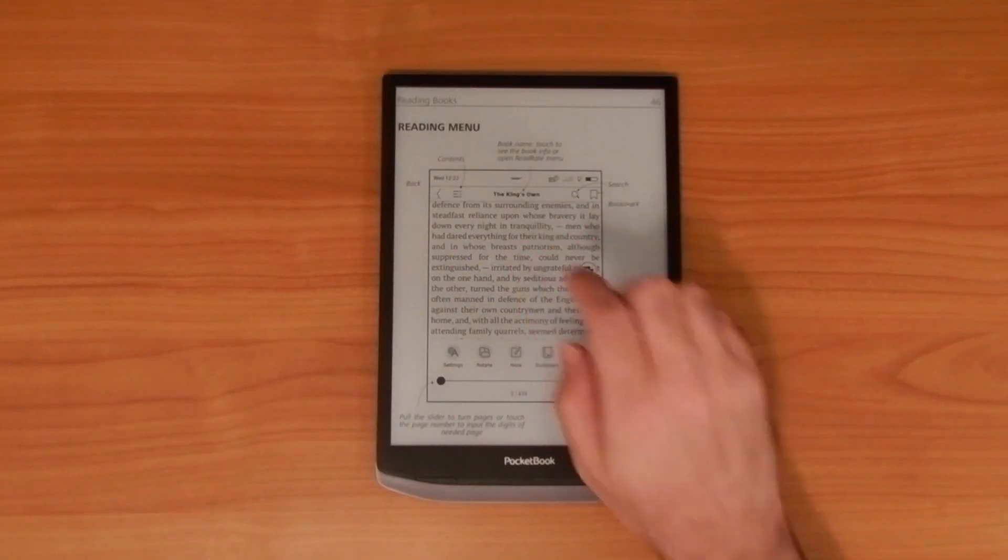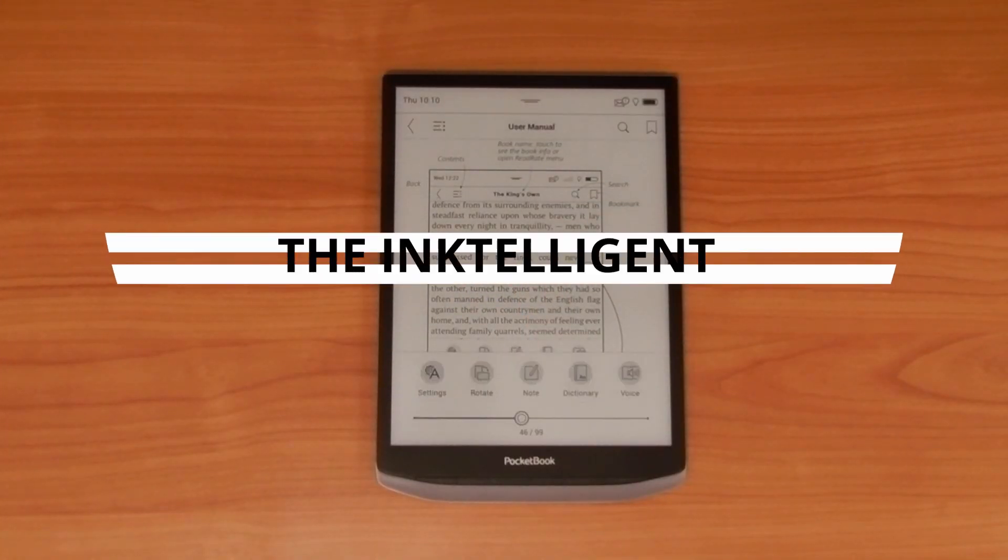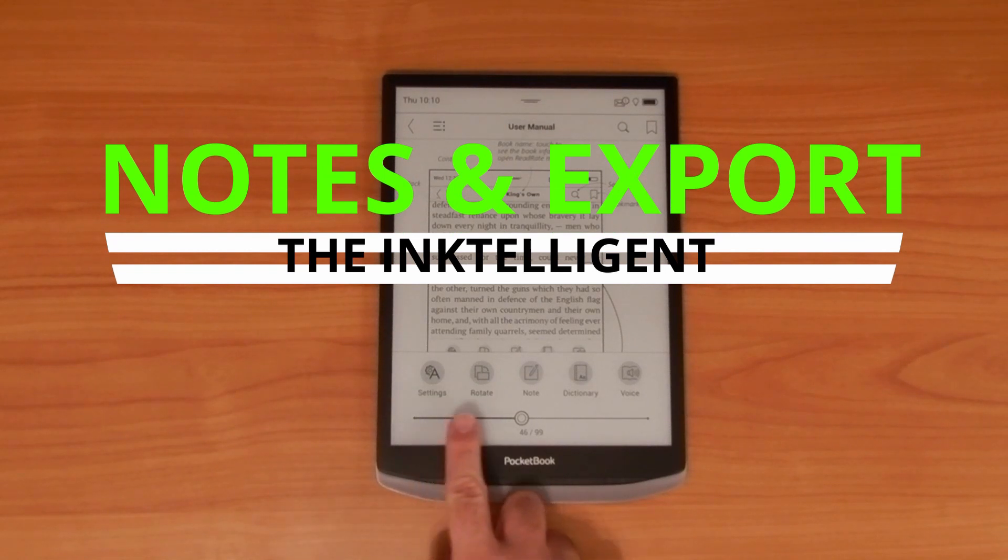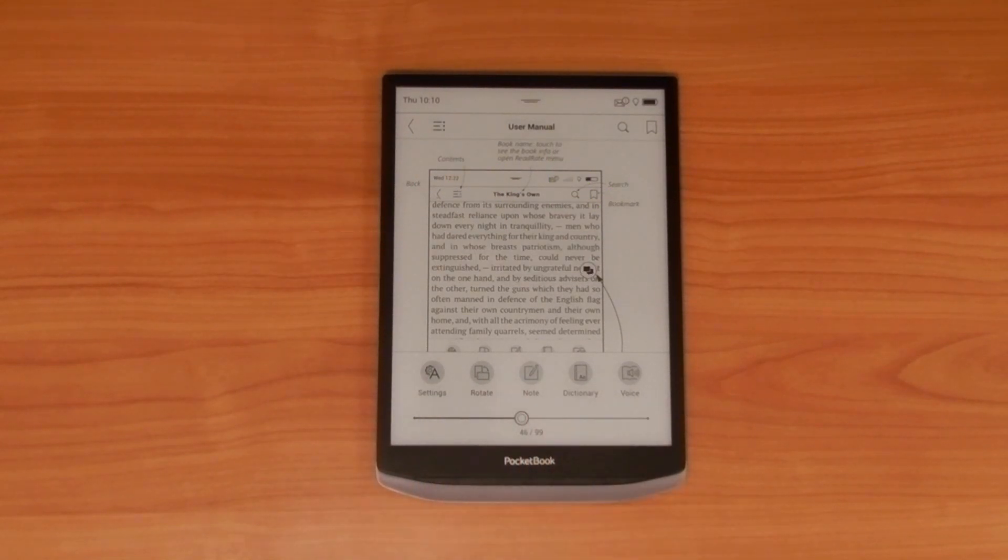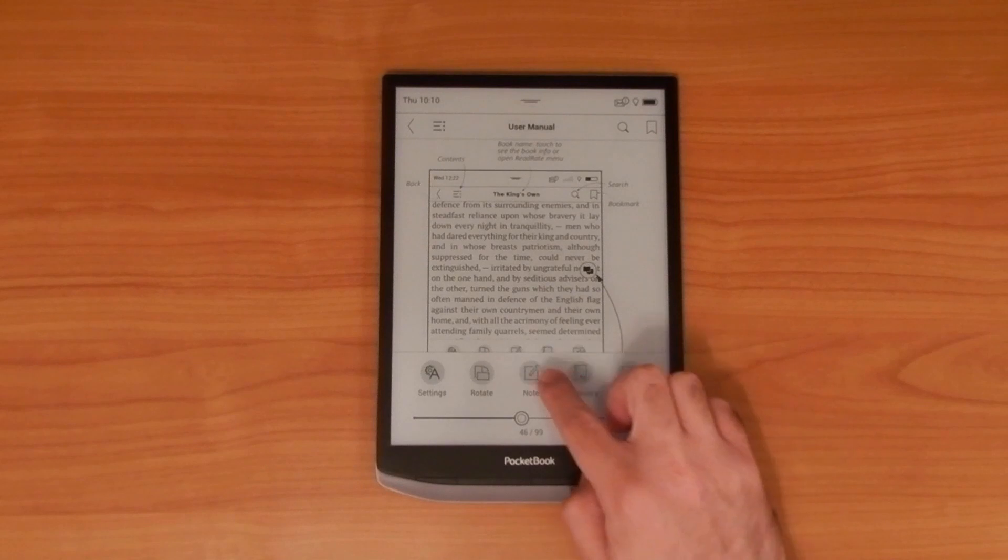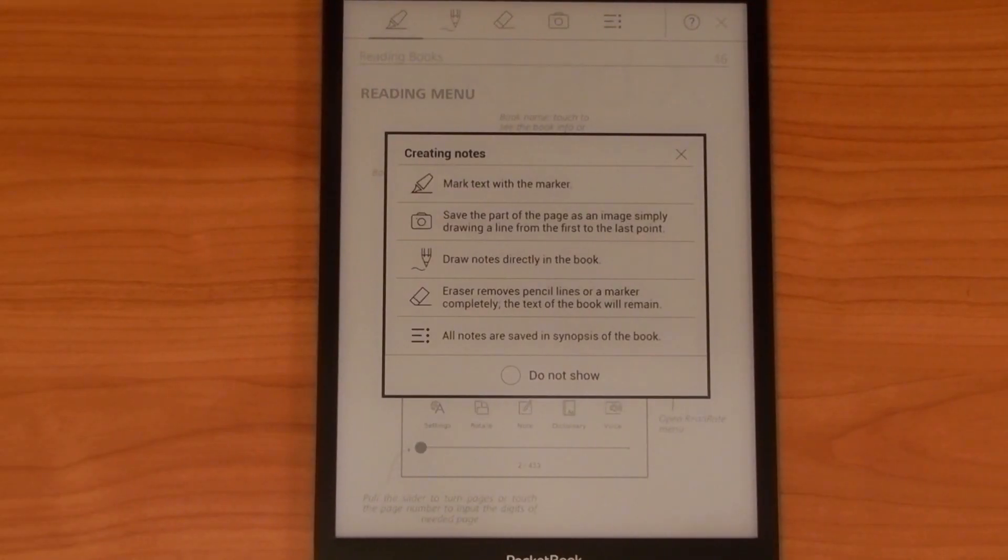You can access Notes via the main in-document menu. When you open the Notes option, the device has a pop-up to explain the functions of each icon. I think it's a nice touch, but you can disable this so it doesn't pop up every time. First up, you have the Marker option.